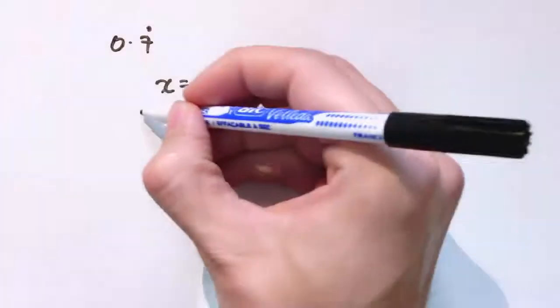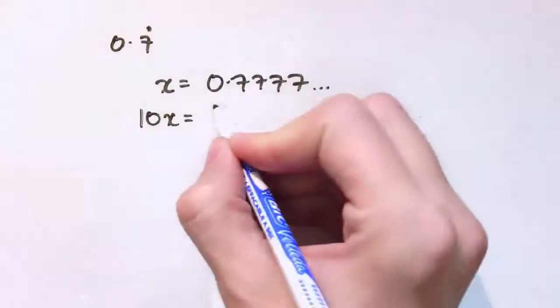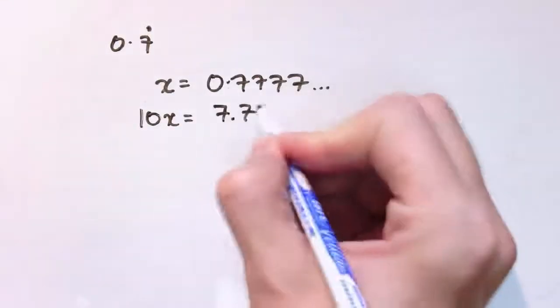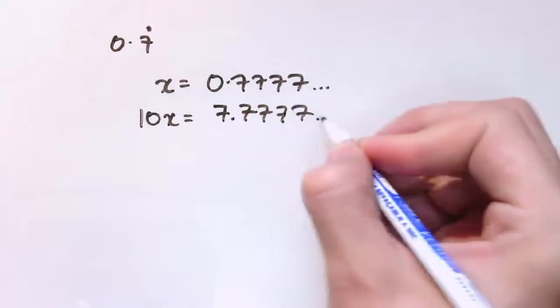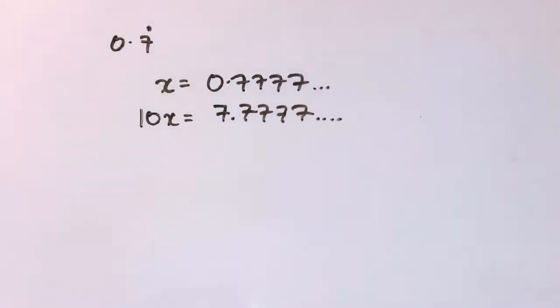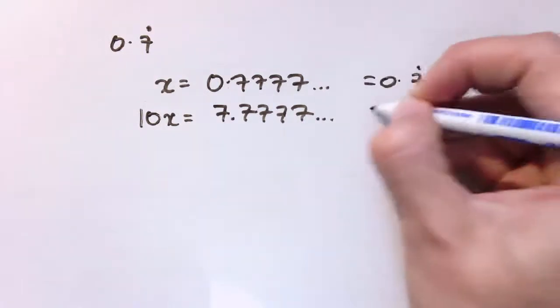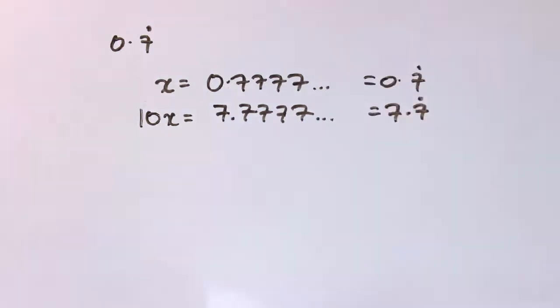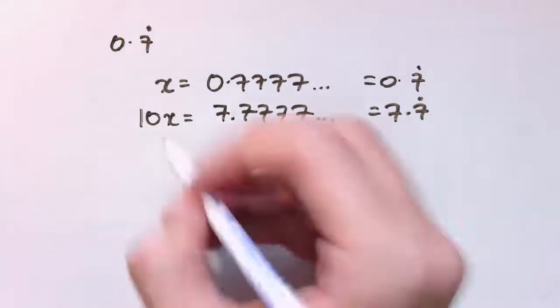Then we'll multiply it by 10 to get 10x. If I multiply this by 10, I'm just going to get 7.7777... so I've got 7.7 recurring. This is 0.7 recurring and this is 7.7 recurring.